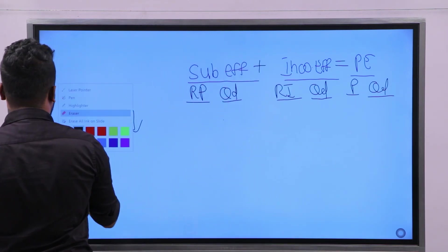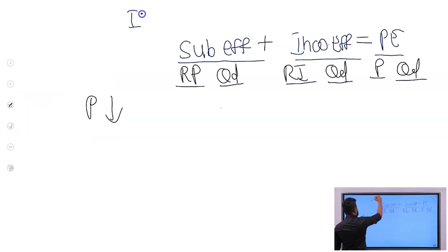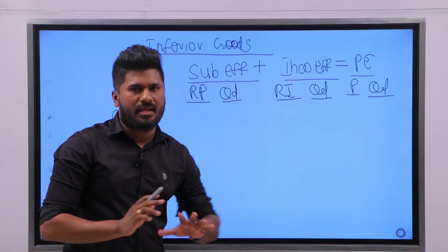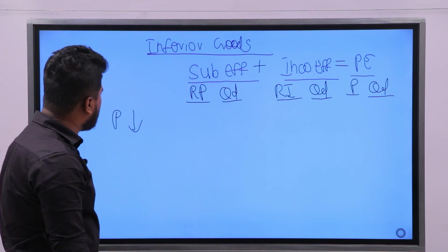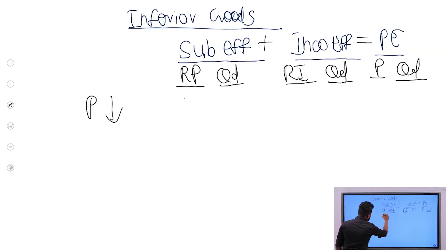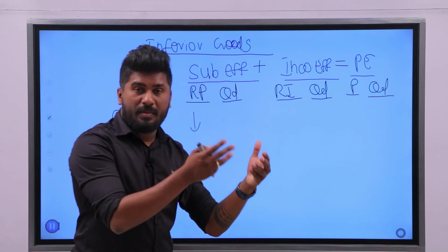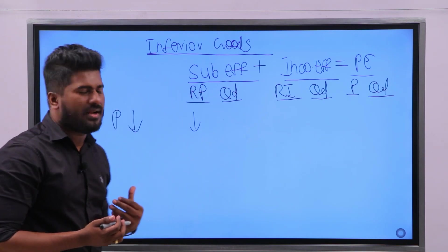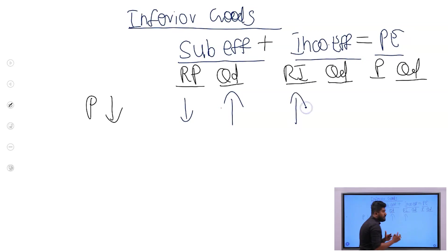Now let's discuss inferior goods, using the food cycle as an example. When the price of the food cycle decreases, its relative price decreases. As a result, people who were using substitutes instead of food cycles are now moving to food cycles. So the substitute effect causes quantity demanded of food cycles to increase.